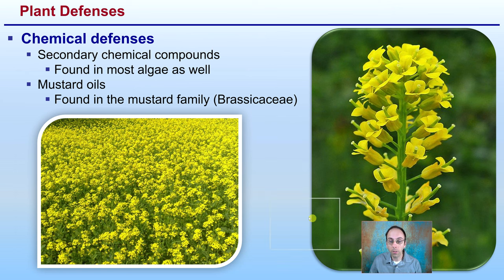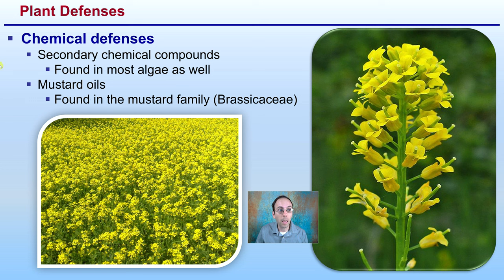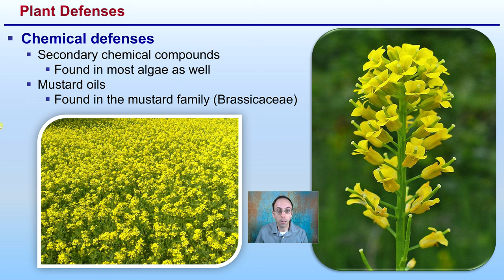Plants have also evolved chemical defenses. These are secondary chemical compounds that can be found in most algae as well. Mustard oils, as we can see in this image here, are one common example, found in the mustard family, the Brassicaceae.